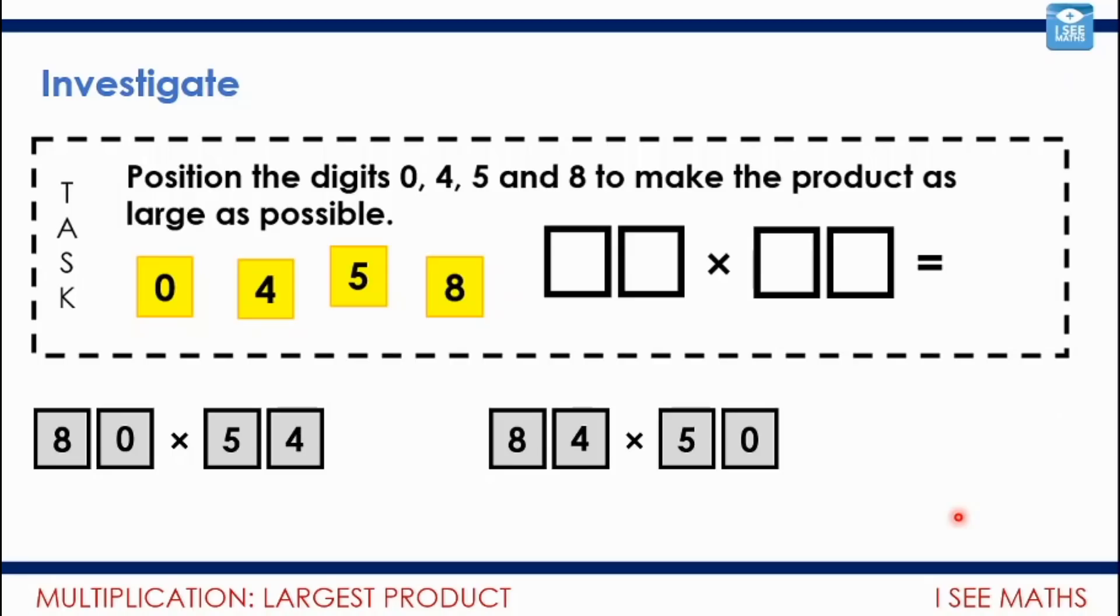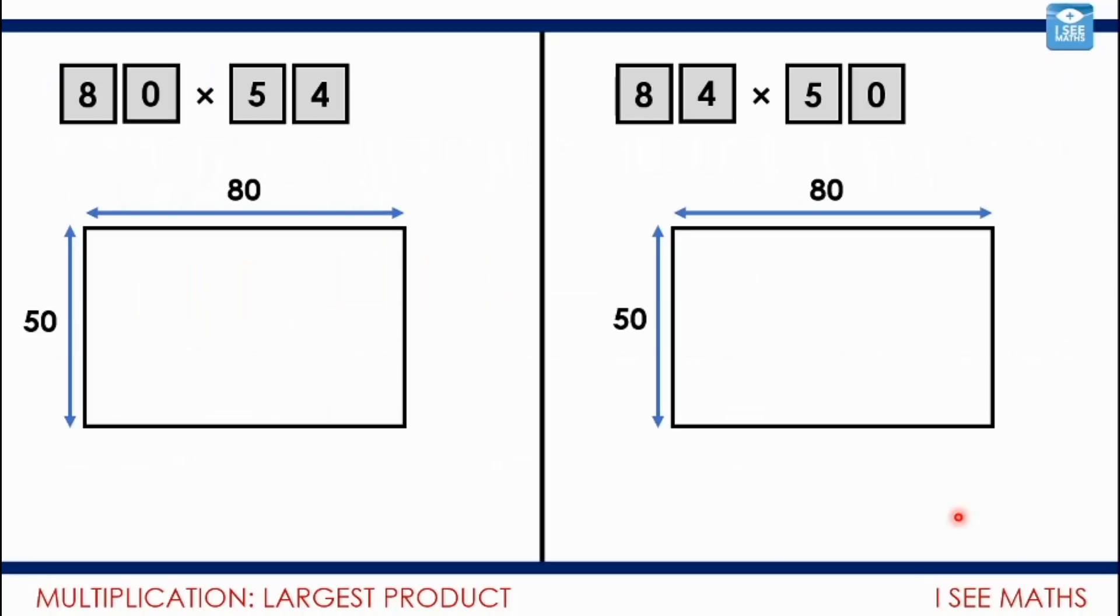I wonder what your explanation is or what your thinking is there. I'm going to show you a picture that helps me to understand this. Here, on these two images, on the left, I'm going to show you 80 multiplied by 54 with an area model. And on the right, I'm going to show you 84 multiplied by 50 with an area model. Now, so far, I've shown an area model for 80 multiplied by 50 on both pictures. Pause the video and have a think. How will each area model be changed? What's going to happen to the area model here to make it 80 multiplied by 54? What will happen here to make this area model 84 multiplied by 50? And so, which will have the larger product?